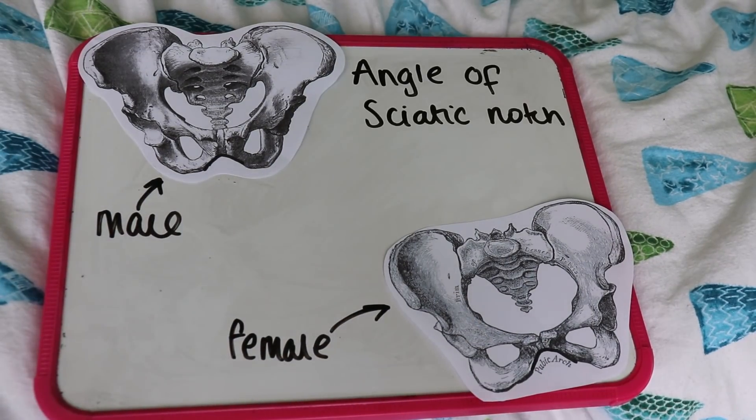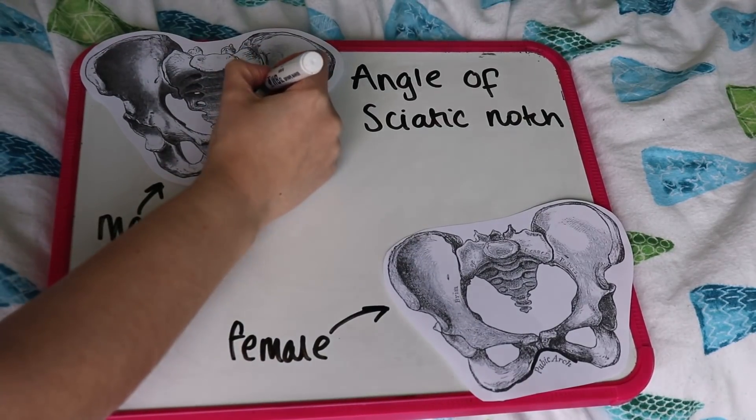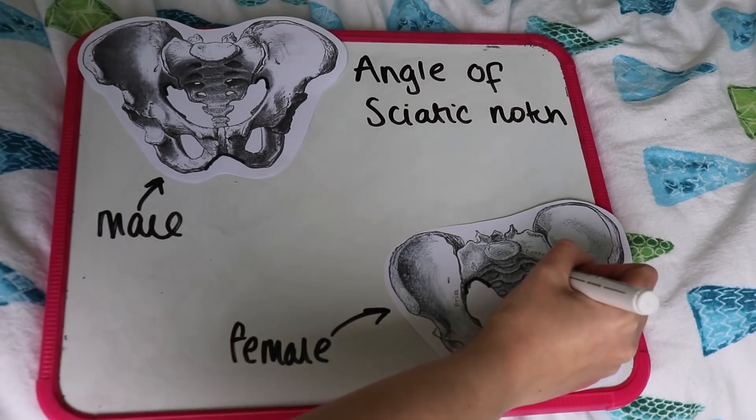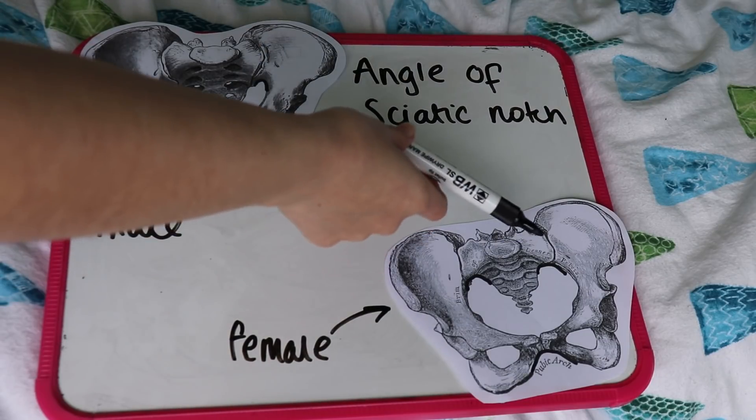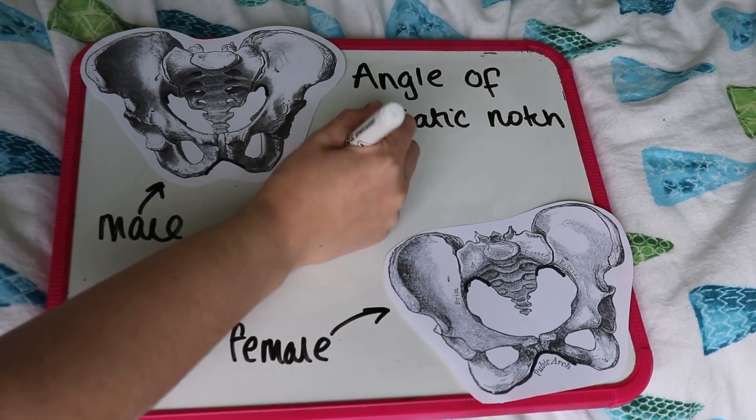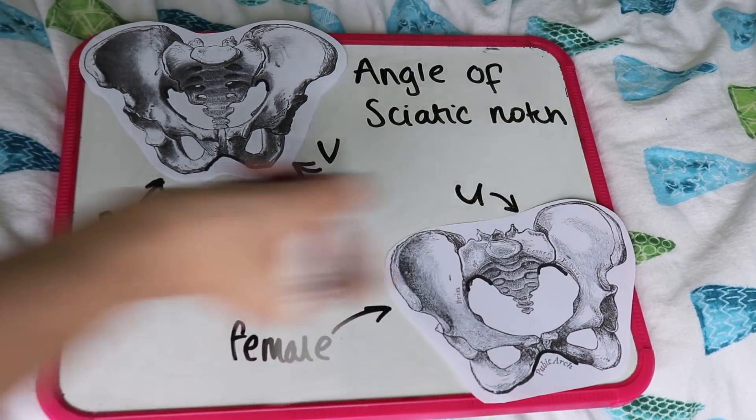Another thing to look out for is the angle of the sciatic notch. In men, it is much smaller, more of an acute angle. In women, it is more of an obtuse angle — more of a V shape in men and a U shape in women. A study by Sinc and Peturi in 1978 found that out of 200 random pelvises of known sex, the average angle for female pelvises was 82.7 degrees, whereas for men it was 65.3 degrees. There was however a 10-degree overlap in the range, so it does need a scale and you need to look at other features, combining it with features from the skull or other aspects of the pelvis.